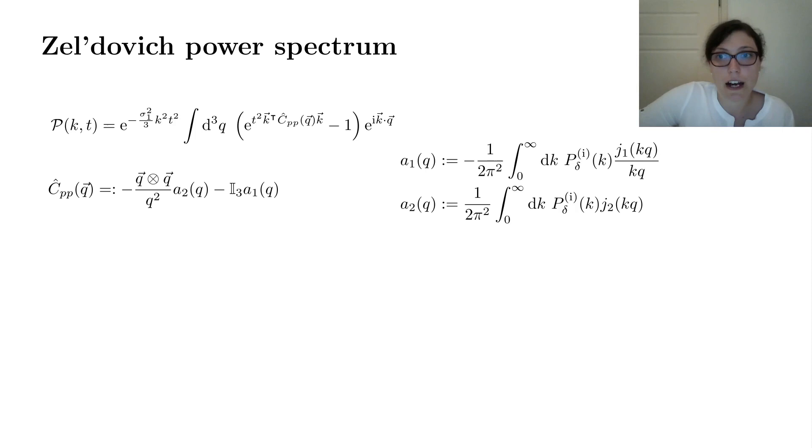Now let's come to the Zeldovich power spectrum. This will be our first object of investigation. The Zeldovich power spectrum in KFT looks very similar or basically the same as in LPT. We have an oscillating integral, we have an exponential damping pre-factor, and here we integrate over initial particle positions. Here in the exponent is the initial momentum correlation matrix, which can be written in terms of these two functions, a₂(q) and a₁(q). And due to the continuity equation that has to hold initially, these two functions are given in terms of the initial density perturbation power spectra, integrated together with some Bessel functions.